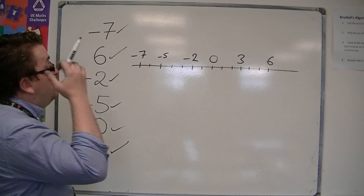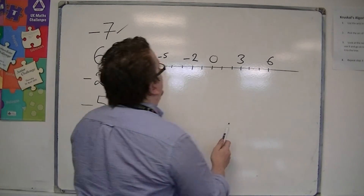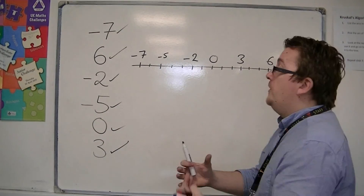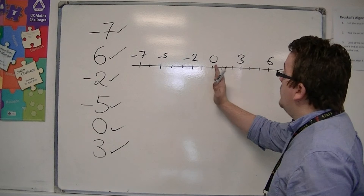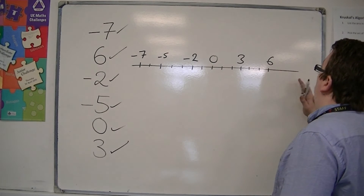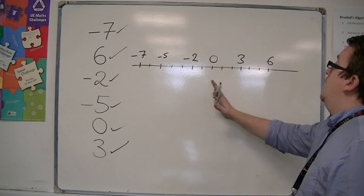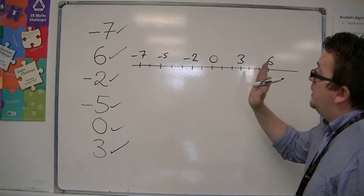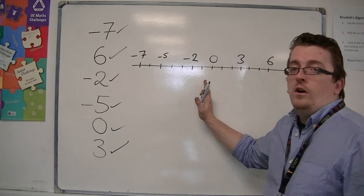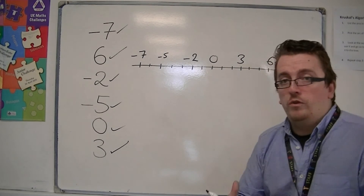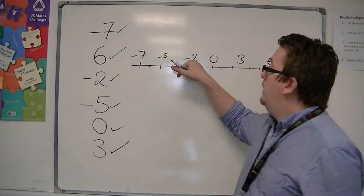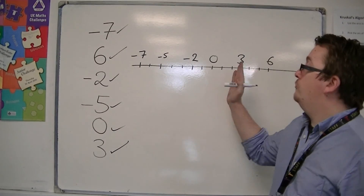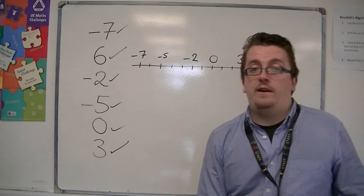So making sure that you understand that our normal positive numbers from zero are going up and increasing in the direction from left to right. And the negative numbers are decreasing, but the number next to the negative is obviously increasing from right to left.